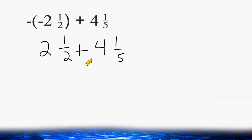Now just by using some estimation, if we were to add the whole numbers 2 and 4, that would give us 6, and then if we were to add the fractions together, that would give us 6 and some fraction. So we know our answer is going to be somewhere in between 6 and 7.